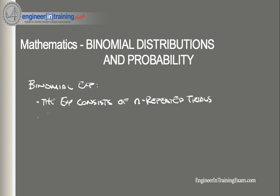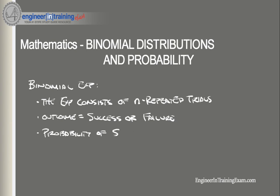Second, each trial can result in just two possible outcomes: success or failure. Number three, the probability of success, denoted by p, is the same on every trial. And four, the trials are independent — that is, the outcome on one trial does not affect the outcome on other trials.